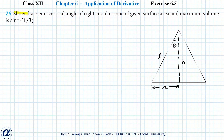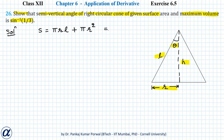In this question we want to show that the semi-vertical angle of a right circular cone of given surface area and maximum volume is sin⁻¹(1/3). Here we have a right circular cone with base radius r, height h, slant height l, and semi-vertical angle θ. The surface area equals the curved surface area πrl plus the area of the base πr², and this we treat as constant.